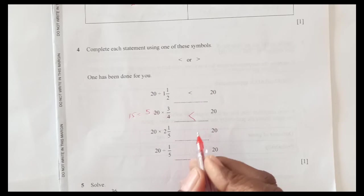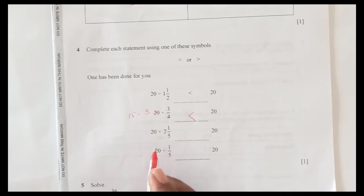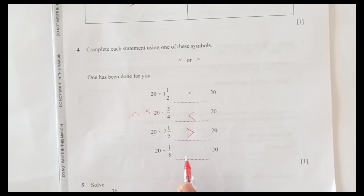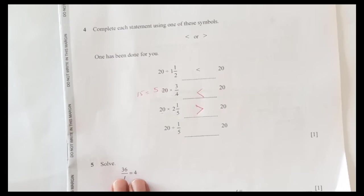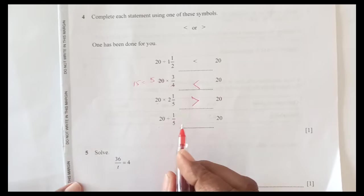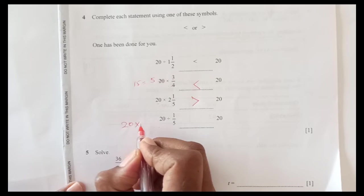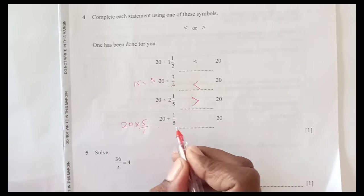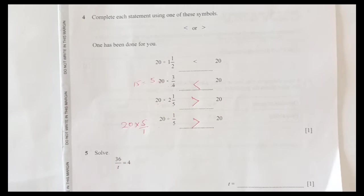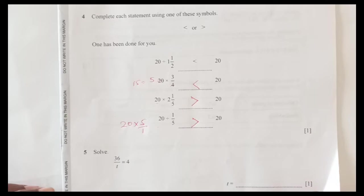And this one here: 20 times 5 compared to 10 times 11. We are multiplying by a greater number, so it is obviously going to be greater. There is no need to do all the calculations, you can just use basic knowledge. Now this 20 divided by 1 over 5, meaning 20 times 5 over 1 if you take the reciprocal. So 20 times 5 is 100, it is obviously greater than 20.